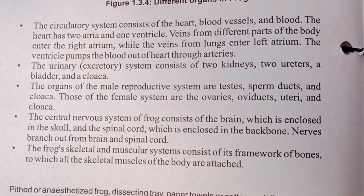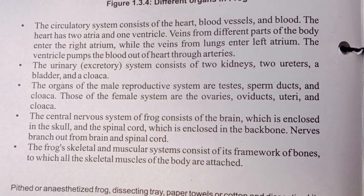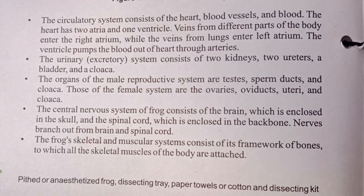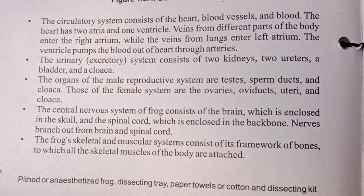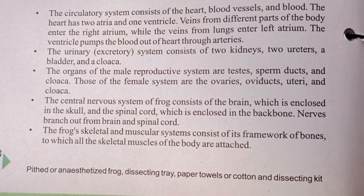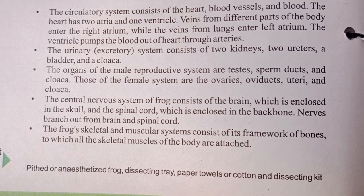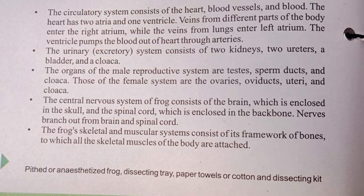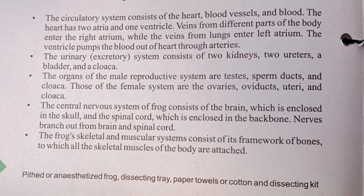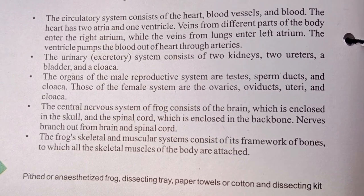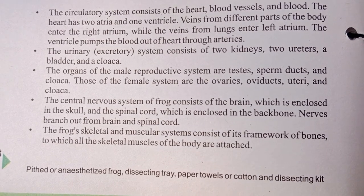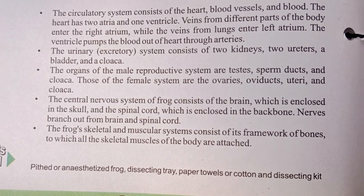The central nervous system of the frog consists of the brain, which is enclosed in the skull, and the spinal cord, which is enclosed in the backbone. Nerves branch out from the brain and spinal cord. The skeletal and muscular system consists of a frame of bones to which the skeletal muscles of the body are attached.